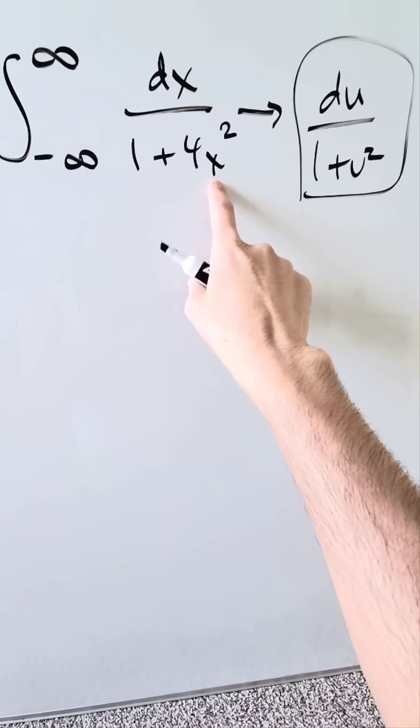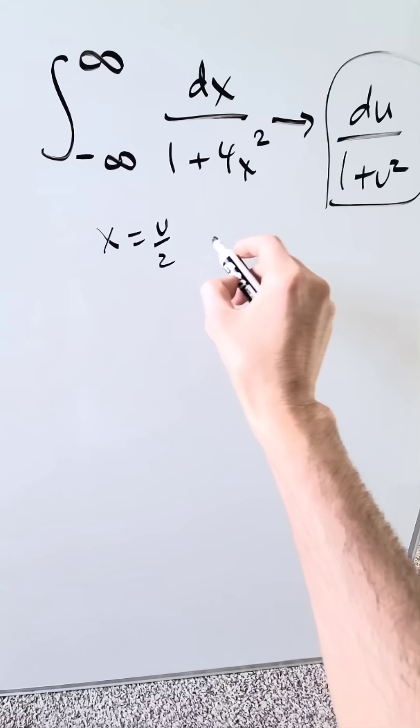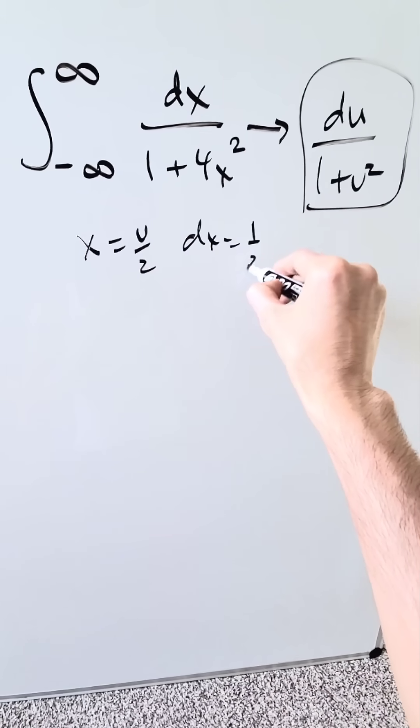How do we do this? By good substitution of x. If x were equal to u over 2, then dx is equal to 1 over 2 du.